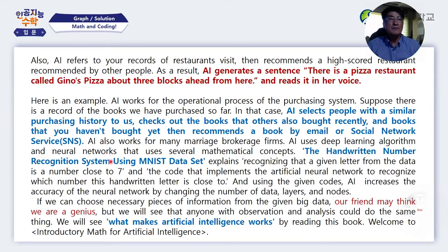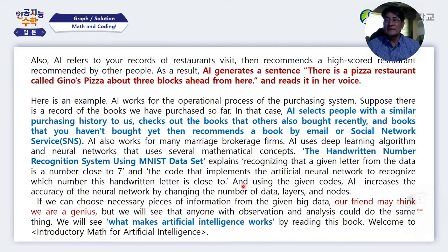The handwritten number recognition system using the MNIST dataset will be covered in chapter 5. It involves recognizing that a given letter from the data is a number close to 7, and implementing an artificial neural network to recognize each number. Using the given code, AI increases the accuracy of the neural network by changing the number of data, layers, and nodes. This system has brought dramatic changes to the postal office system.